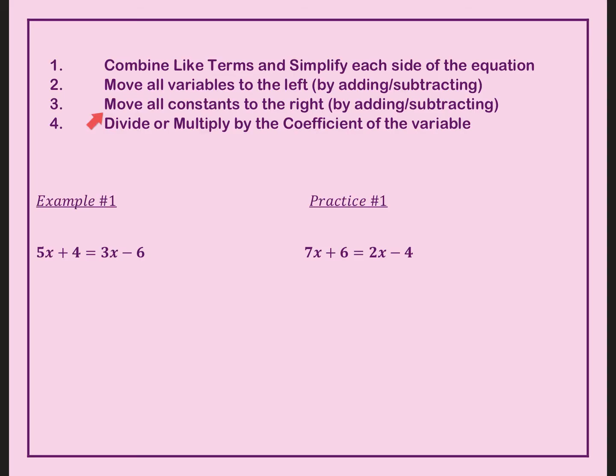Next, we're going to move all constants - numbers that don't have letters attached to them - to the right. And then if there is a coefficient in front of the x, like 3x or one half x, we're going to divide or multiply to get that variable by itself.